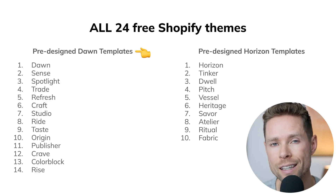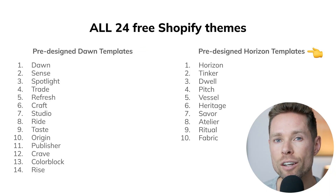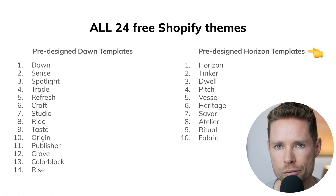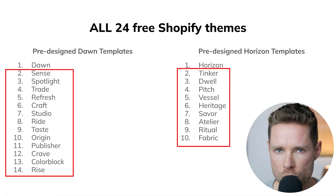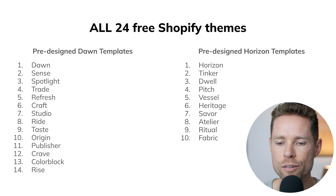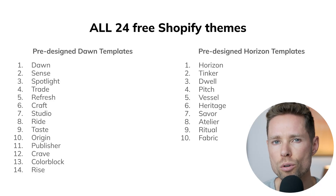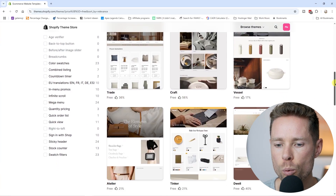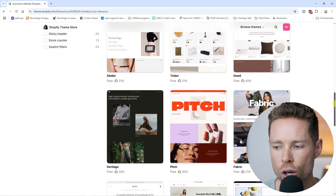There are only two free Shopify themes: the Dawn theme released in 2021 and the Horizon theme released in 2025. All the other 22 options are just pre-designed variations of those two. Shopify doesn't make that super clear, which can be confusing especially if you're new to Shopify. So at the end of the day, if you're looking for a free Shopify theme, you're choosing between Dawn and Horizon.